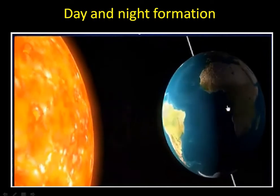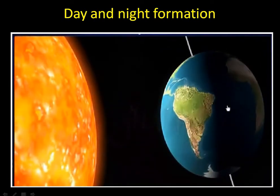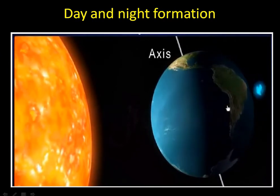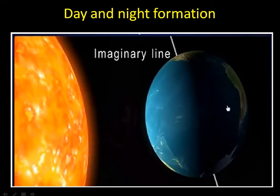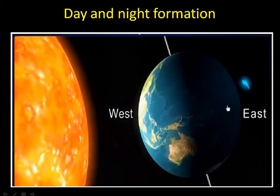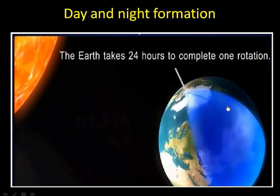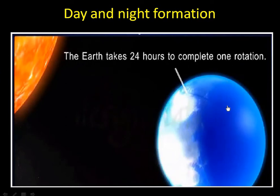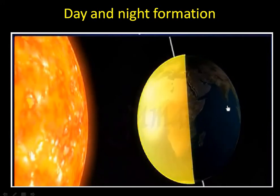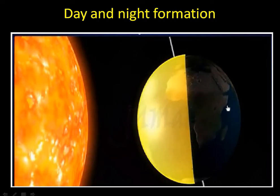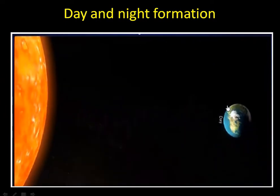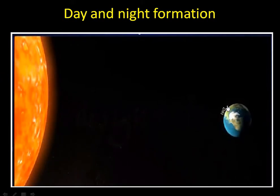Let us look at the position of the Earth relative to the Sun to understand this phenomenon. The Sun is in a fixed position in the solar system, while Earth constantly rotates on its own axis — an imaginary line that runs from the North Pole to the South Pole through the center of the Earth. This rotation is from west to east and takes 24 hours to complete. Due to this rotation and the positioning of the Earth and the Sun, only one part of the Earth faces the Sun at any given time. Thus, the rotation of the Earth changes day into night and night into day again.